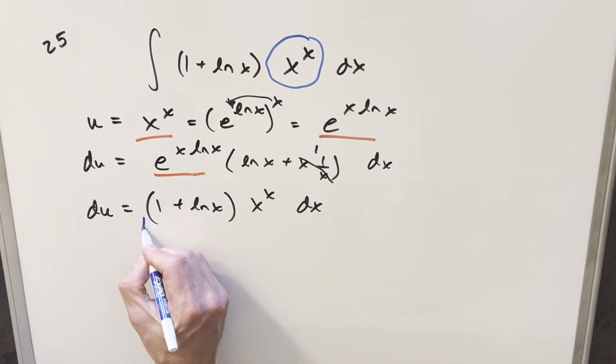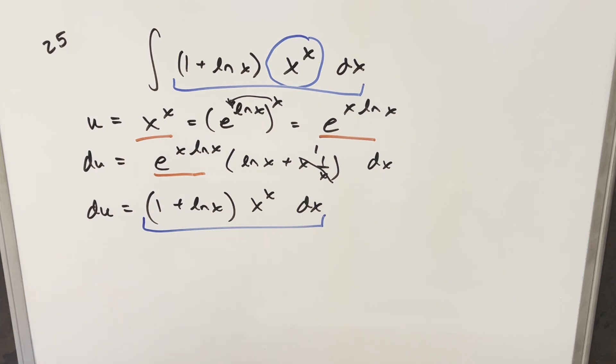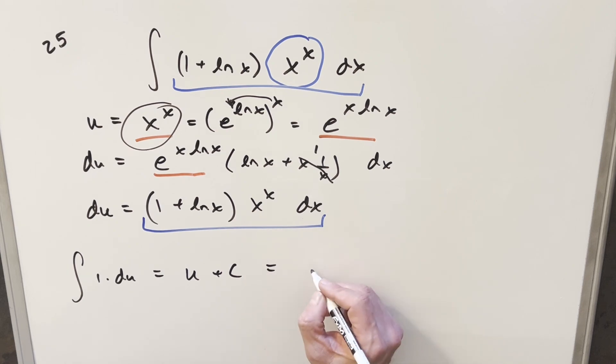But then what just happened? Well, this whole thing right here, this is actually our whole integral. So we can actually rewrite this whole integral as just du or 1 times du and just integrate this. So integrating 1 gives me u. And so we can just back substitute with our value of x. So for the final solution, we just have x to the x plus c.